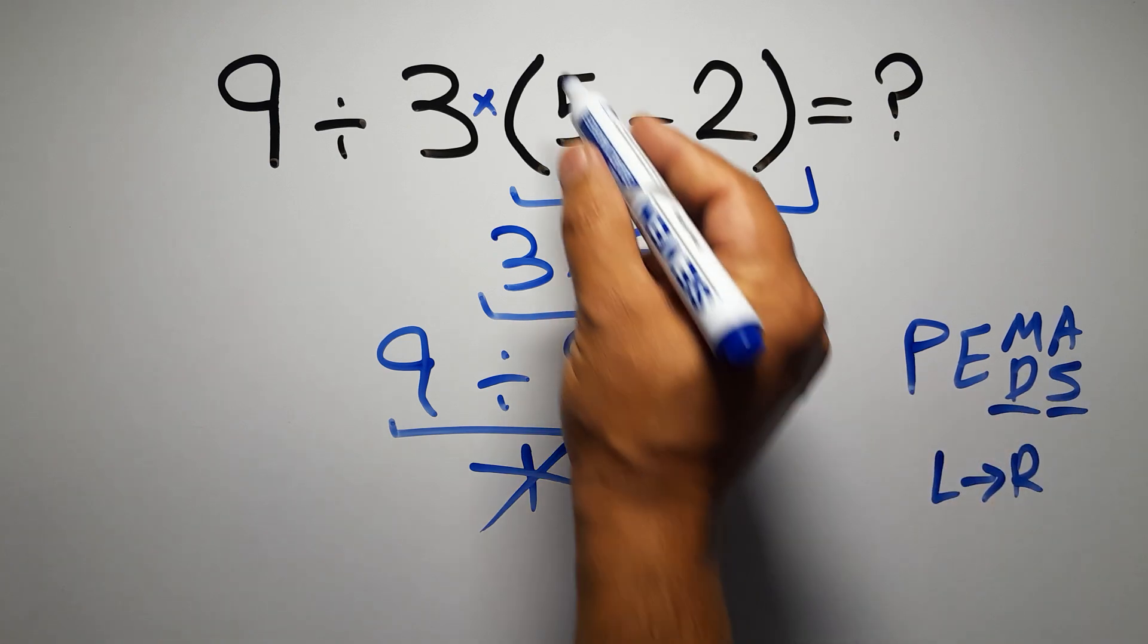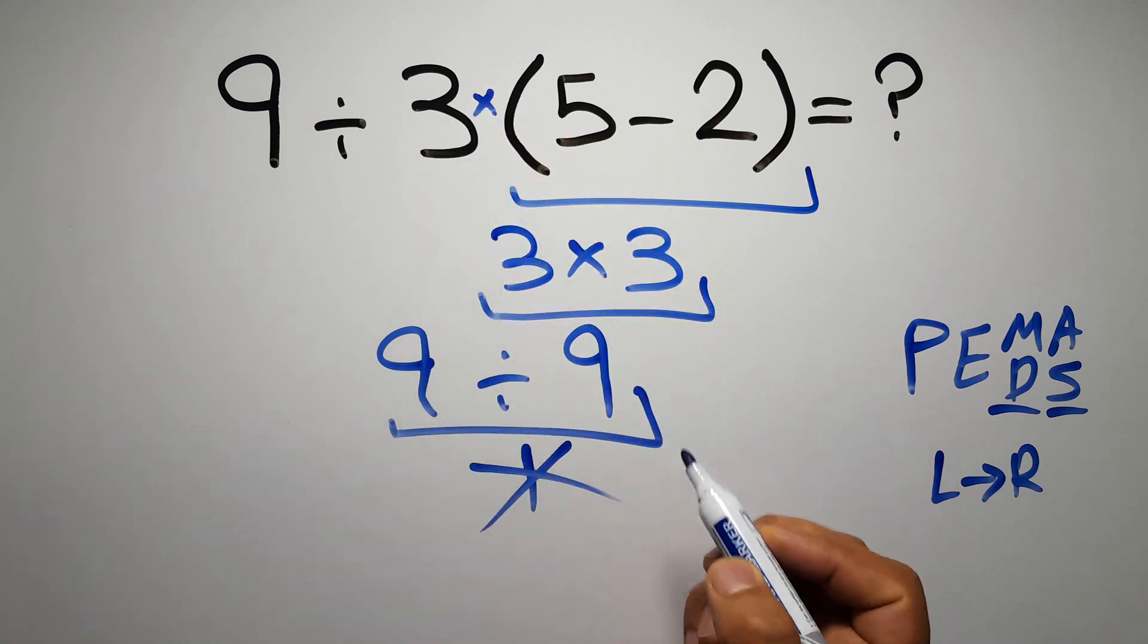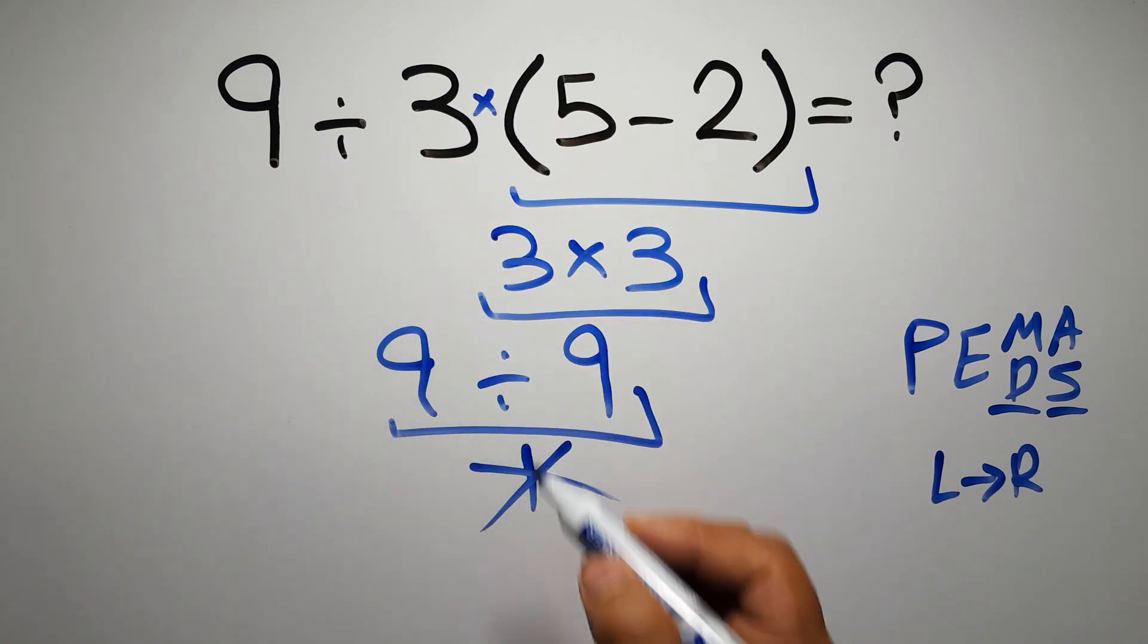So according to PEMDAS, first we have to do this parenthesis, then this division, and finally this multiplication. If we do this multiplication before this division, it is wrong.